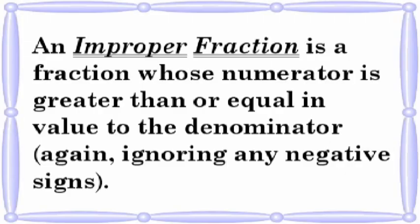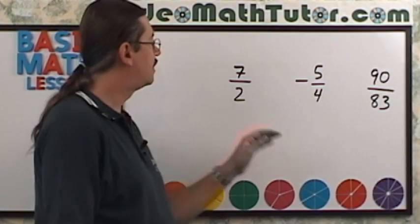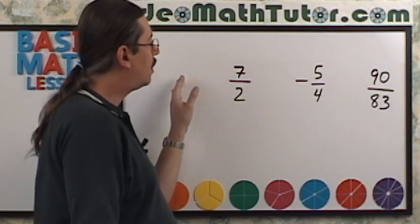An improper fraction is a fraction whose numerator is greater than or equal in value to the denominator, again ignoring any negative signs. Here are some examples of improper fractions. As you can see, the numerators are all larger than the denominators.